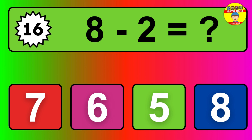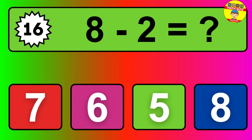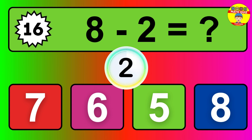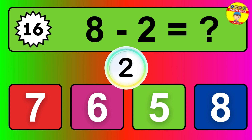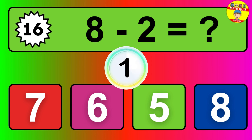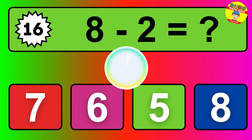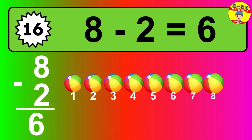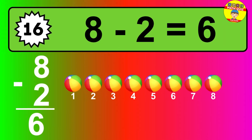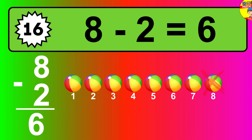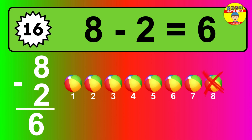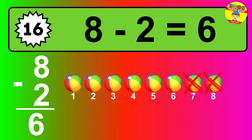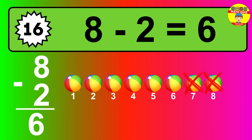Question 16. 8 minus 2 equals what? So the answer is 8 minus 2 is 6. Let's count it: 1, 2, 3, 4, 5, 6.